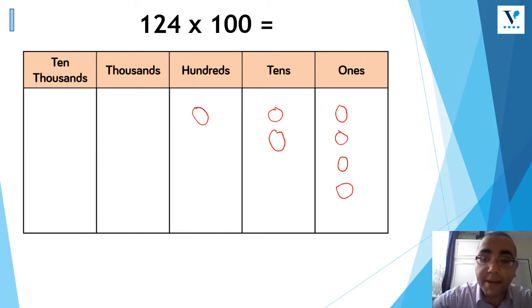For this example, I'm just going to use circles to represent the counters. So I've got one counter for 100 to represent 100 in the 100 column. I have two 10s, and I've got four 1s.